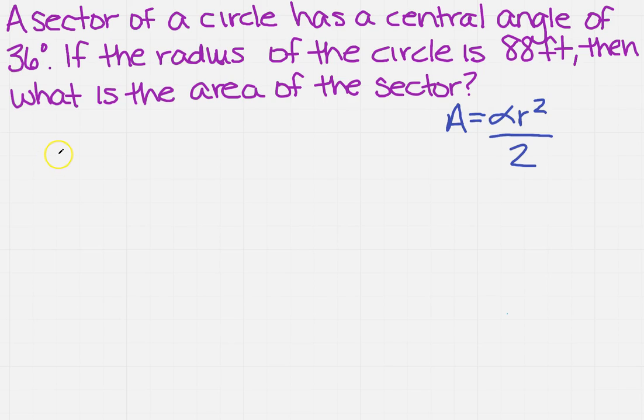Well, I have everything, right? So I've got alpha, which we know is 36 degrees, but I'm going to have to convert that into radians. So I've got that. I know R is 88, and I know that 2, that's a constant. So I can just plug it into my formula. So A equals,